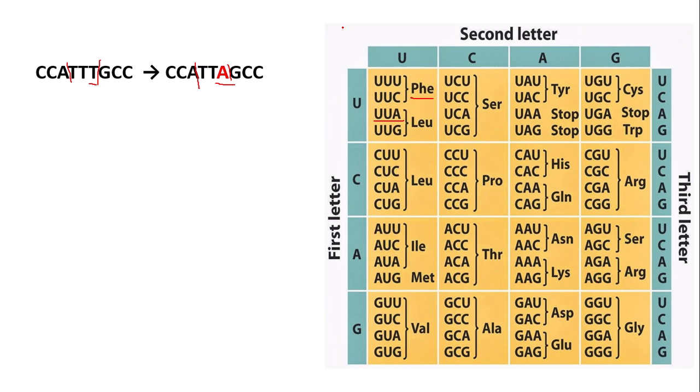However, the degenerate nature of the genetic code means that sometimes the amino acid sequence isn't changed. The degenerate nature means there are more codons than amino acids, so there is more than one codon for each amino acid. For example, T being converted to C changes TTT to TTC — that is, UUU or UUC — and as you can see, these both encode phenylalanine. So the amino acid sequence isn't changed and therefore the primary and tertiary structure of the protein isn't affected. This is called a silent or neutral mutation.